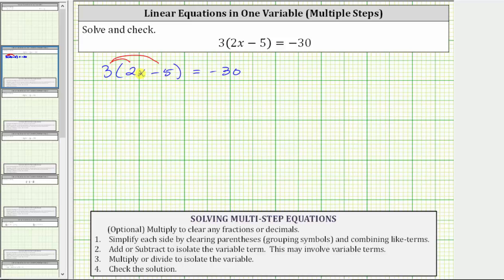Distributing the three, we have three times two x, which is six x. Now for the next product, we will think of this as three times negative five, which is negative 15, giving us minus 15, and this is equal to negative 30.